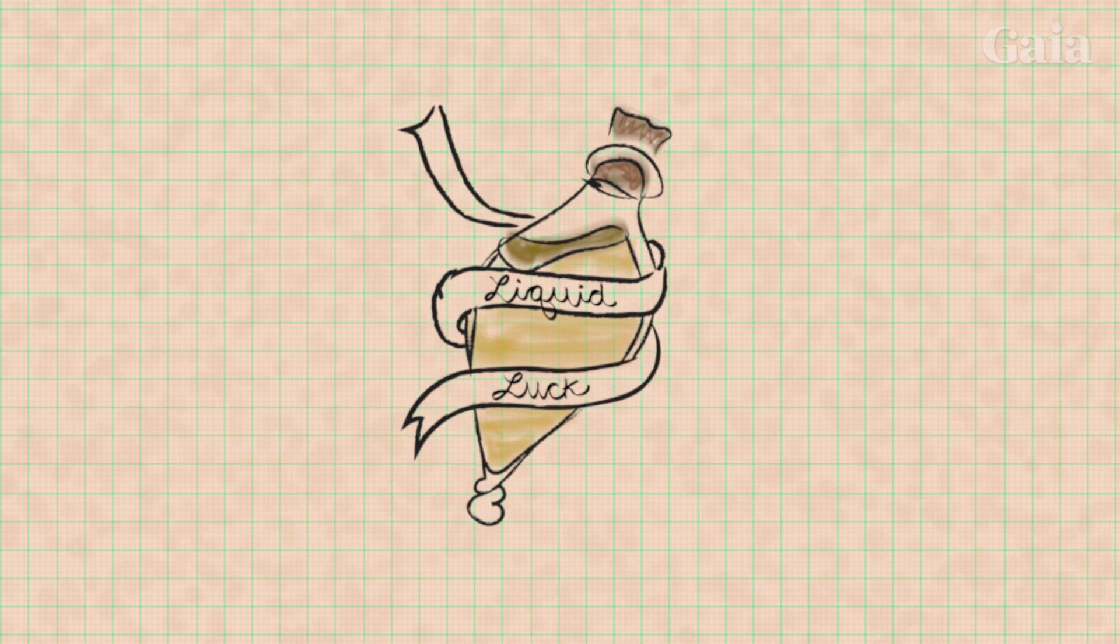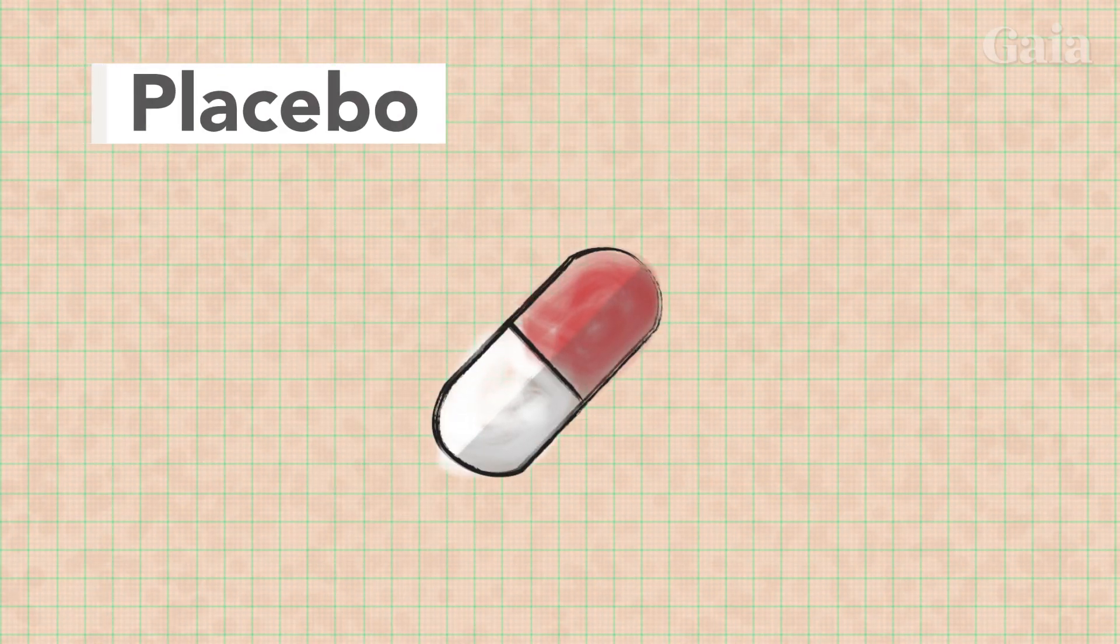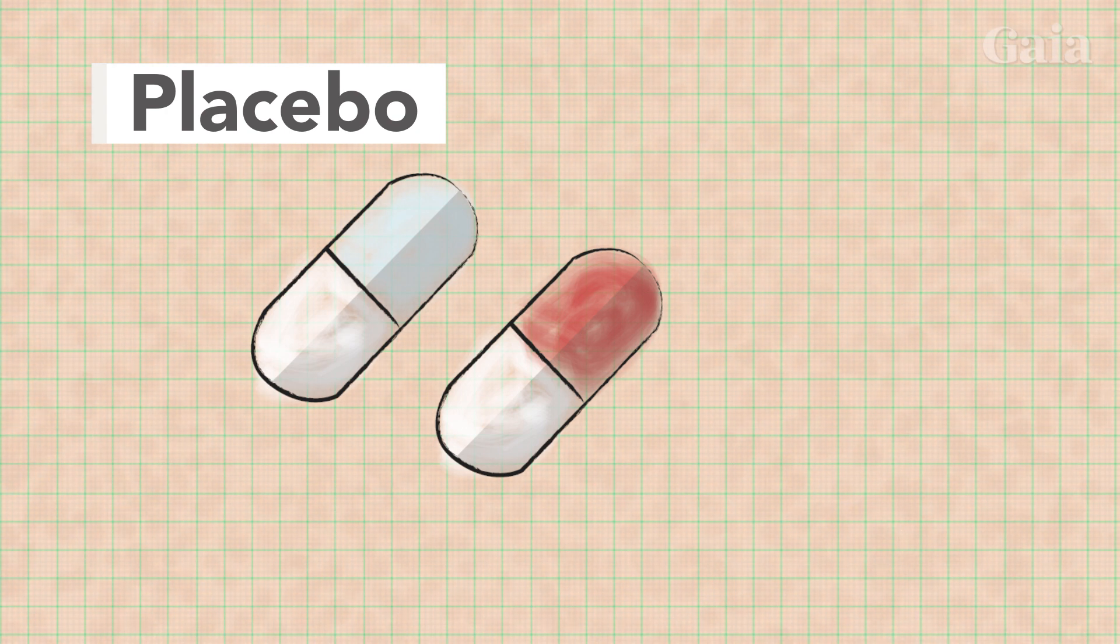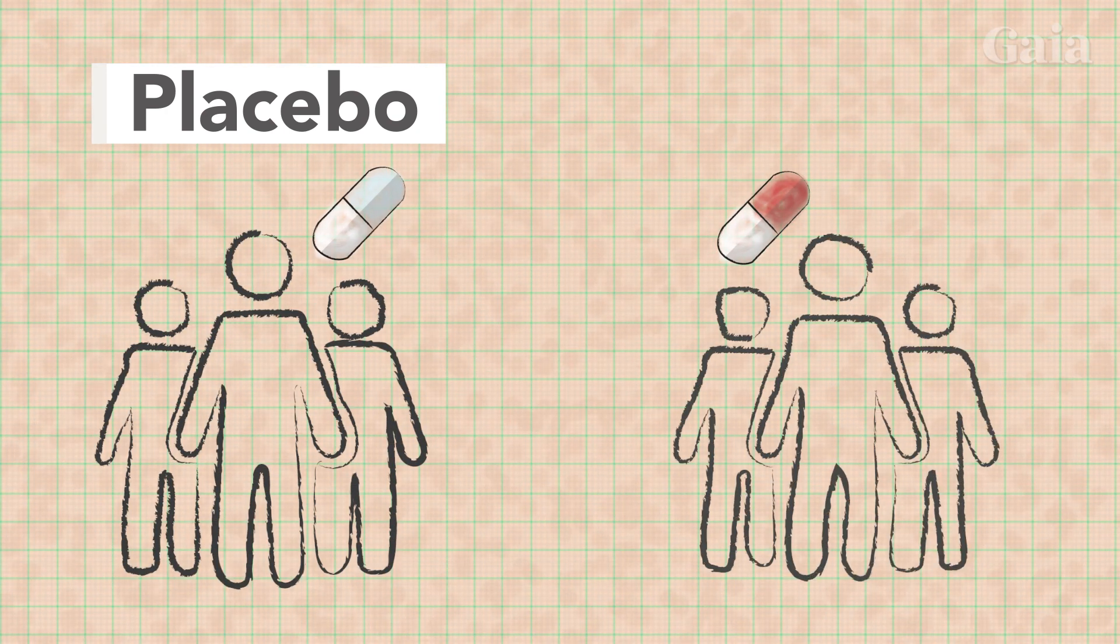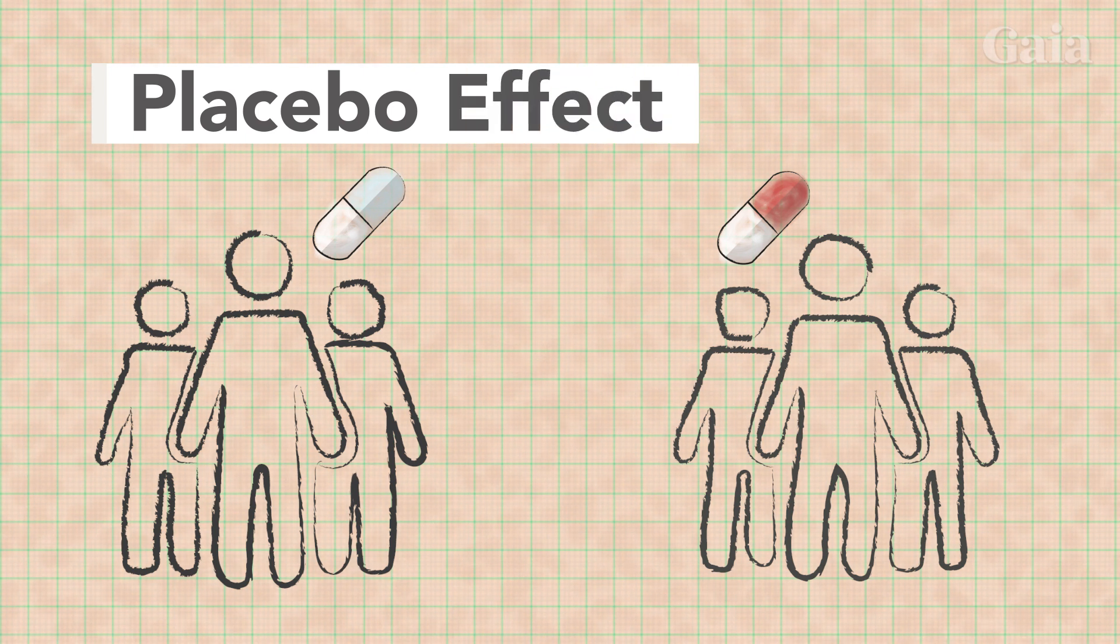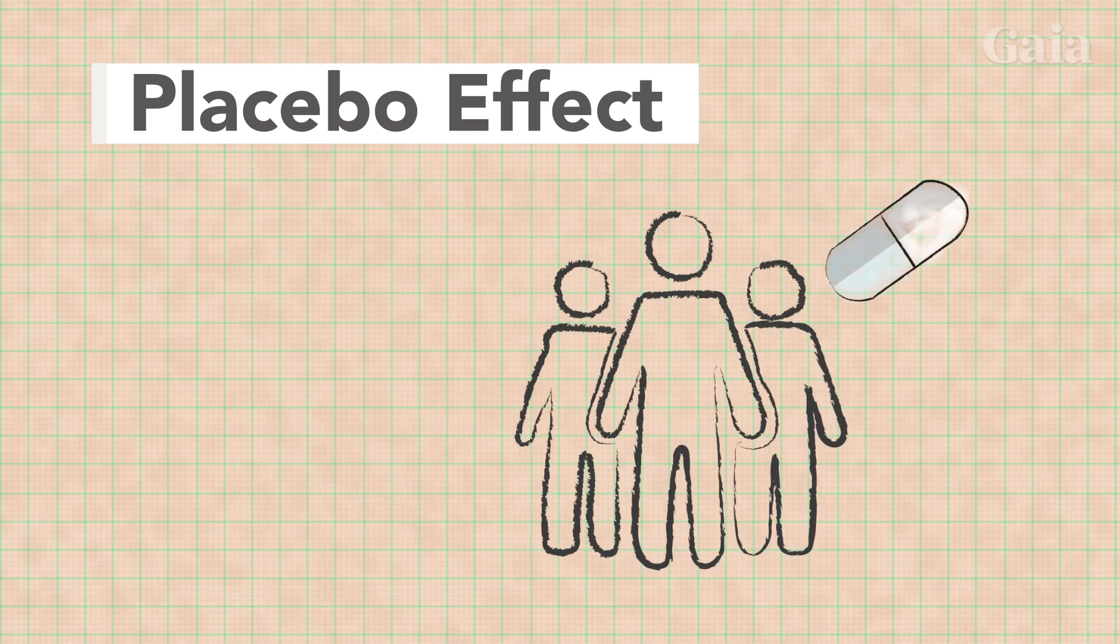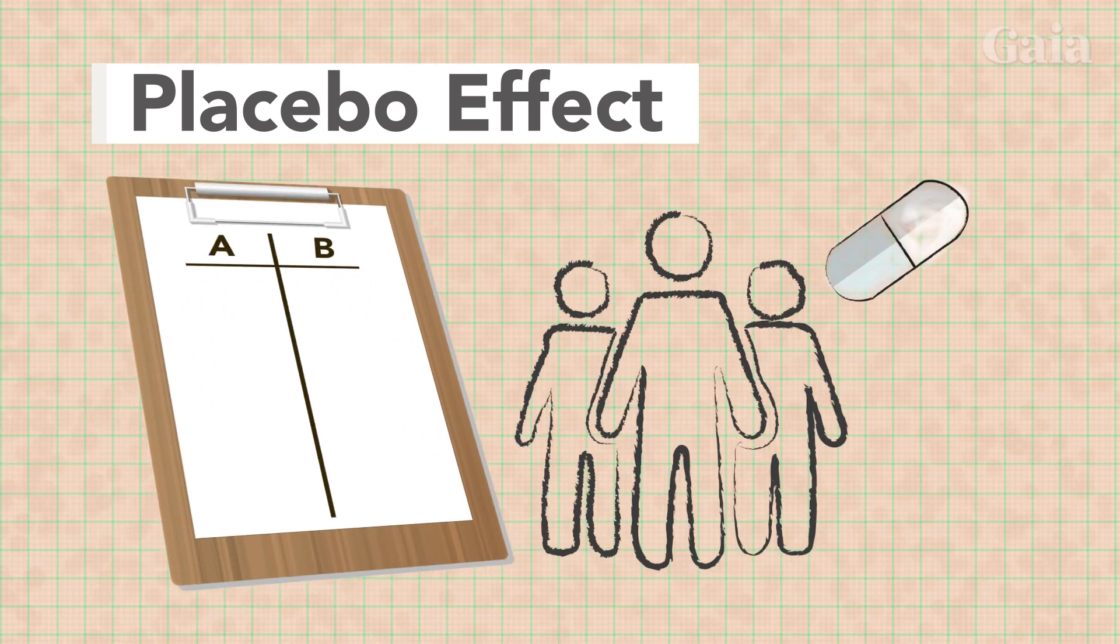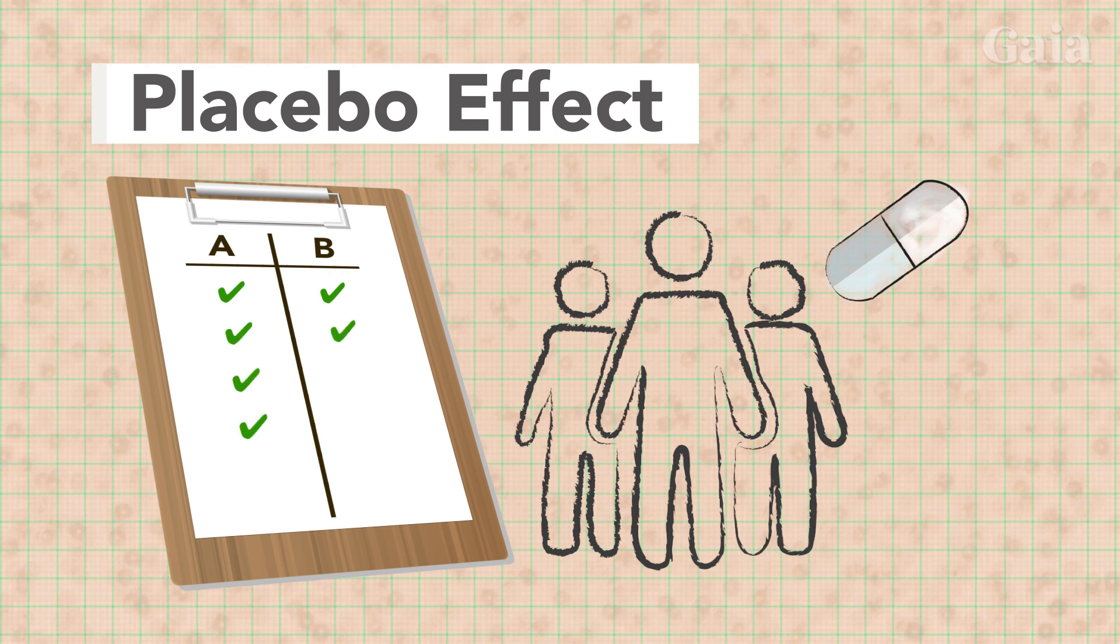This is a prime example of the placebo effect. A placebo is a treatment with no active therapeutic properties, and it's often used as the control in clinical trials to test the effectiveness of new pharmaceutical drugs. But the effect refers to the physiological phenomenon that usually happens to the control group who was given the placebo treatment. Their condition improves in a way that is often comparable and sometimes even better than the test group, even though they weren't given any drugs at all.